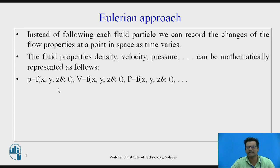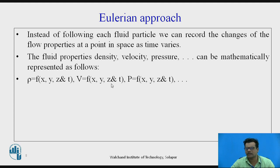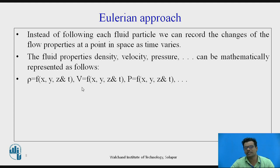Here x, y, z are the spatial coordinates, because as different particles are moving through, velocity is a function of x, y, z, and t, and pressure is also a function of x, y, z, and t. These properties belong to different particles but are measured at the same fixed point — that is the concept of the Eulerian approach.